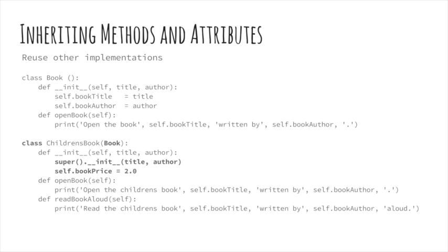This can cause problems if the parent's method performs some function that isn't duplicated in the child's version. A good example occurs when the parent class has attributes that need to be set for correct functioning and the child class defines new attributes that also need to be set. If both classes have the initializer, only the class attributes of the child are set. The super() function gets you around this problem — it returns the class object of the parent, in this example Book. With that object, its initializer may be invoked, setting the attributes booktitle and bookauthor. When it's finished, the child's initializer continues after the super statement and sets the new instance attribute bookprice to 2.0.